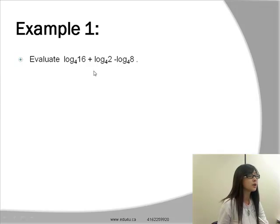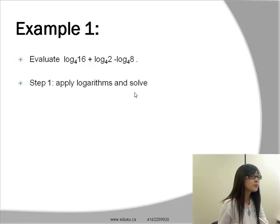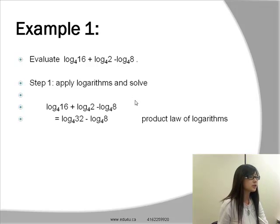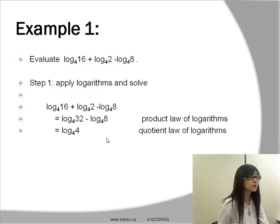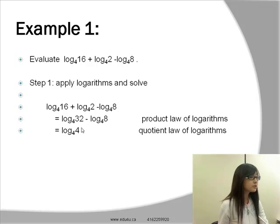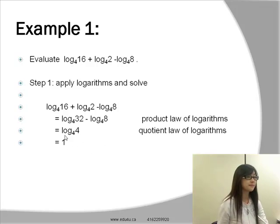Right off the bat, you can see that the bases are all the same, so we can use the product law of logarithm. We start by writing down the original equation. Using the product law, 16 times 2 equals 32. Then using the quotient law, 32 divided by 8 equals 4. Now the base and the argument are equal, so this logarithm equals 1 — a special case of logarithm.